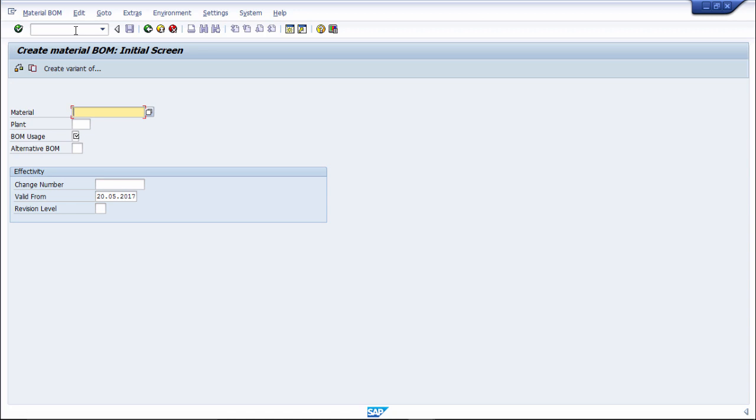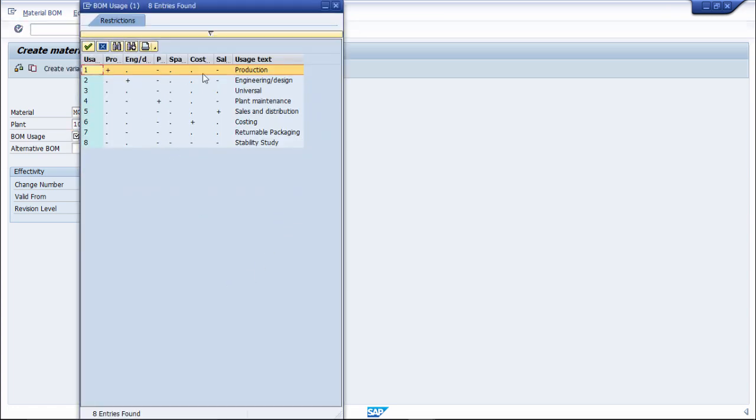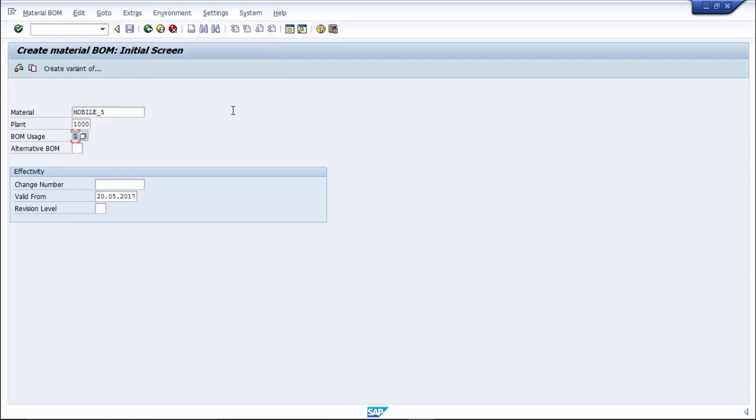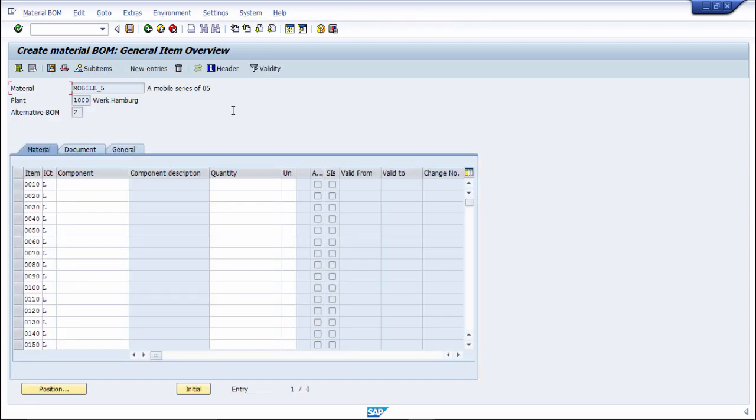Here you have to put the material for which you want to make a bill of material. For example, you put mobile under plant 1000. Then there are different types of BOM usages. For what purpose will we use it? We will use it for production, so we put that here and click enter.